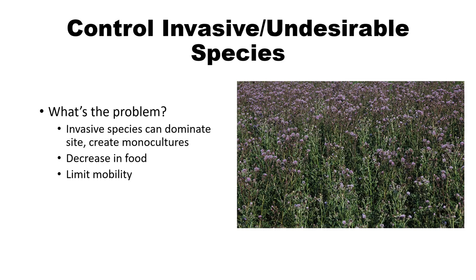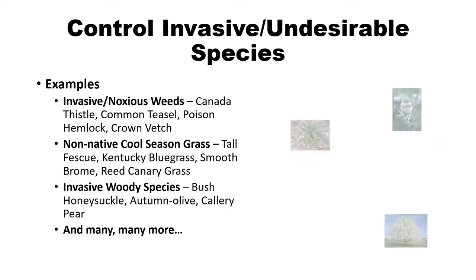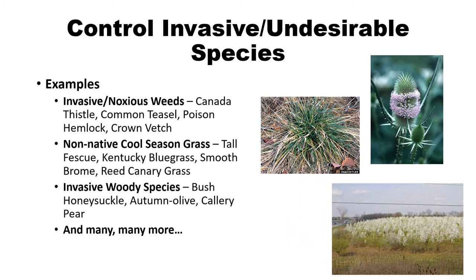Another reason to manage grasslands is to control invasive or undesirable species. Invasive species can create large monocultures that reduce native plant populations. Any monoculture decreases wildlife value by limiting food sources and mobility, particularly for chicks when cool season grasses dominate. Examples of noxious weeds include Canada thistle, common teasel, poison hemlock, and crown vetch — all nasty invasives you do not want in your prairie. In some states, landowners are even required by law to remove them if present on their property.